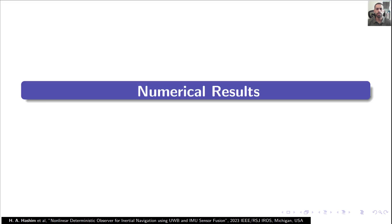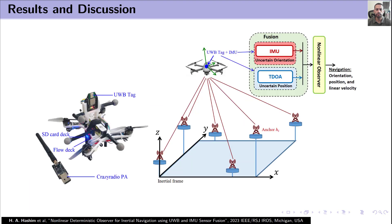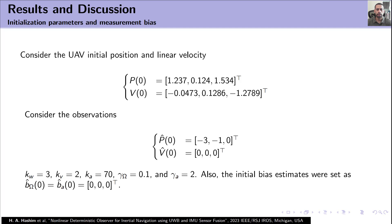Now let us move to numerical results. We consider a data set of a drone equipped with UWB tag and inertial measurement unit, and the drone is traveling between eight anchors. Let us consider the following initial true position and linear velocity, and let us consider the following position and linear velocity estimates. Consider the following design parameters.